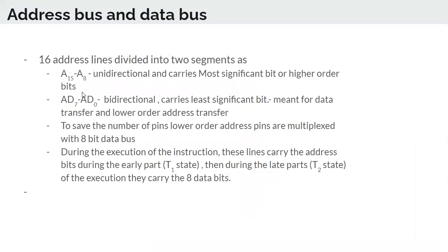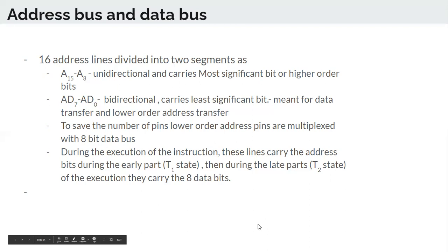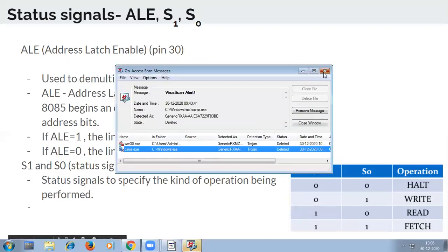The address bus consists of 16 address lines, because the memory address is 16-bit. These 16 lines are divided into two segments. A8 to A15 are unidirectional — data flows in only one direction, toward memory or I/O devices — and they carry the most significant (higher order) bits. AD0 to AD7 are bidirectional; they carry the least significant bits and are multiplexed with the 8-bit data bus to save the number of pins.